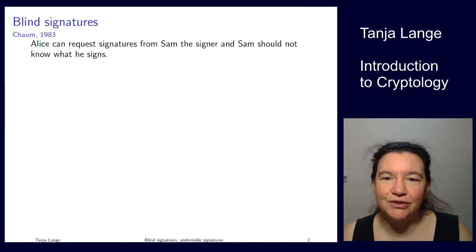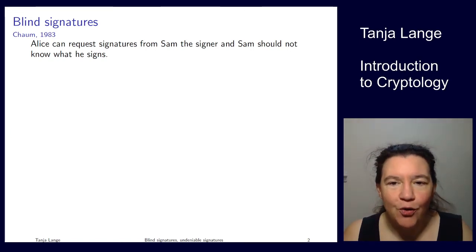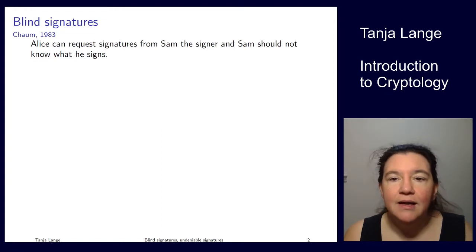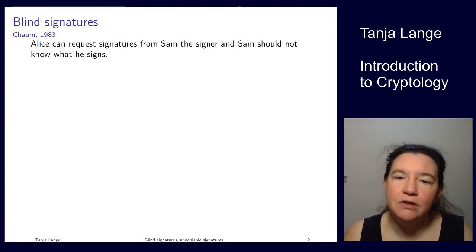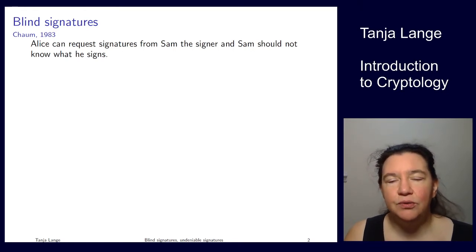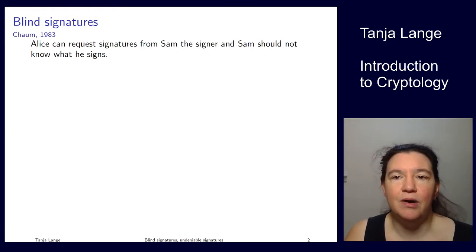The main title of this lecture is blind signatures and undeniable signatures, but a subtitle could be 'why homomorphisms are sometimes desirable.' In the lectures on RSA I was highlighting the issues with homomorphic properties, and normally you don't want them — but here are two examples where we deviate from our normal practices.